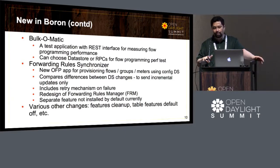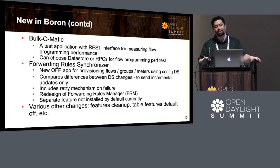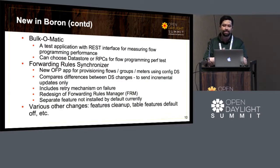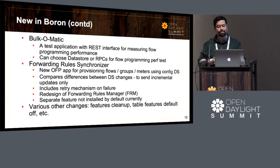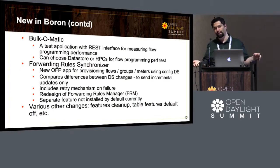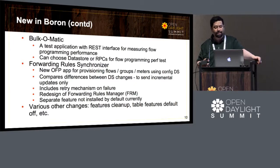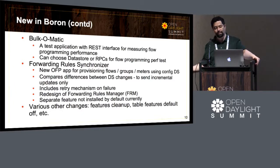The forwarding rules synchronizer will compare differences in the config data store changes and just send incremental updates, with retry mechanisms on failure. It's a redesign of the forwarding rules manager mentioned earlier, but it's still a separate feature which is not enabled by default currently. We'll look at the Carbon release to assess how much improvement it provides. There were also other changes with respect to feature cleanup and making table features default.